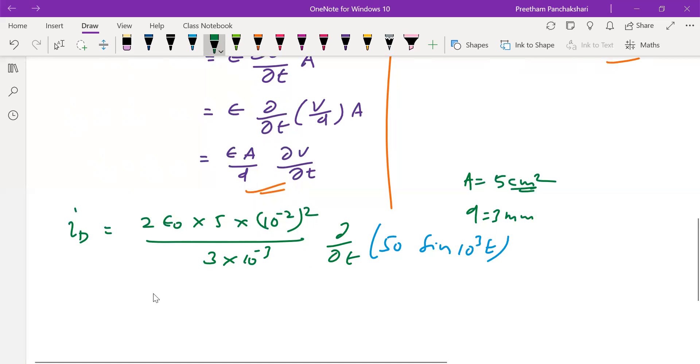So now let us simplify here: 5 into 8.854 times 10 power minus 12, that is the absolute permittivity. 5 into 10 power minus 4 divided by 3 milli, the denominator.